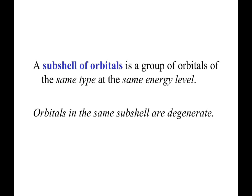And this slide seems a little redundant, but a subshell of orbitals is a group of orbitals that may be occupied by electrons. Those orbitals will be of the same type at the same energy level, and all of those orbitals in that subshell are degenerate.